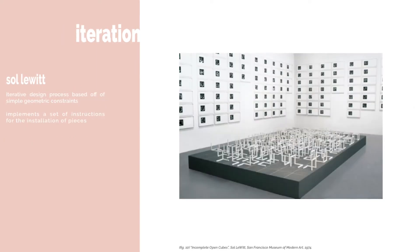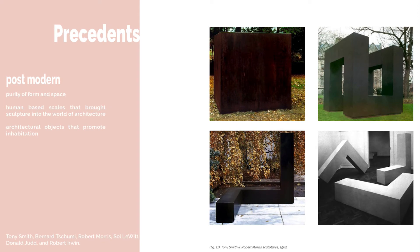Solowit is a great example of a designer that develops a methodology of design rules and iteration to drive a set of geometric forms. Solowit provided detailed instructions for the construction of his wall drawings and sculptures. The post-modern sculpture of the 60s and 70s created a purity of form and space, and the human-based scales of the designs brought sculpture into the world of architecture — they were now architectural objects that people can inhabit.